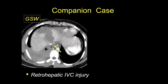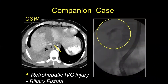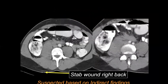Companion case: a patient who sustained a gunshot wound to the right thoracoabdominal region. Note the IVC injury with irregularity in the retrohepatic IVC, which has a significantly worse prognosis than other injuries. The patient also had a biliary fistula.